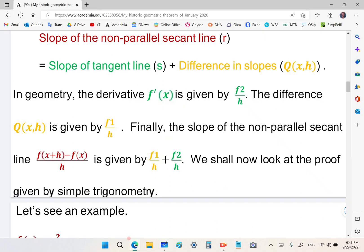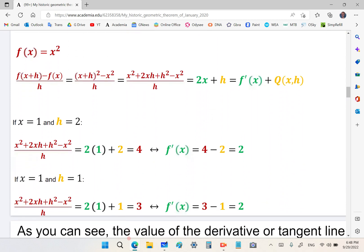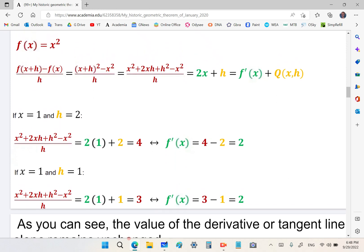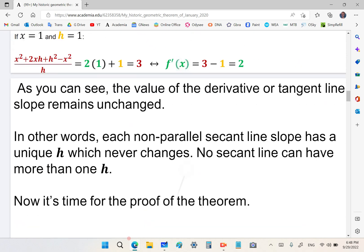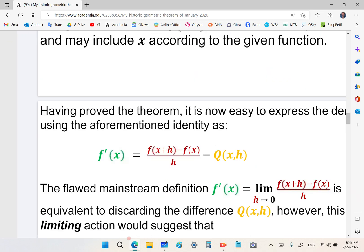So the baboons who constitute what is called mainstream math academia and are constantly awarding themselves Abel prizes and all sorts of other Fields medal prizes are rejecting my correction, refusing to acknowledge that I'm right and they are wrong. This is basically what I'm telling you in this video. Now, this is just one small part of it.